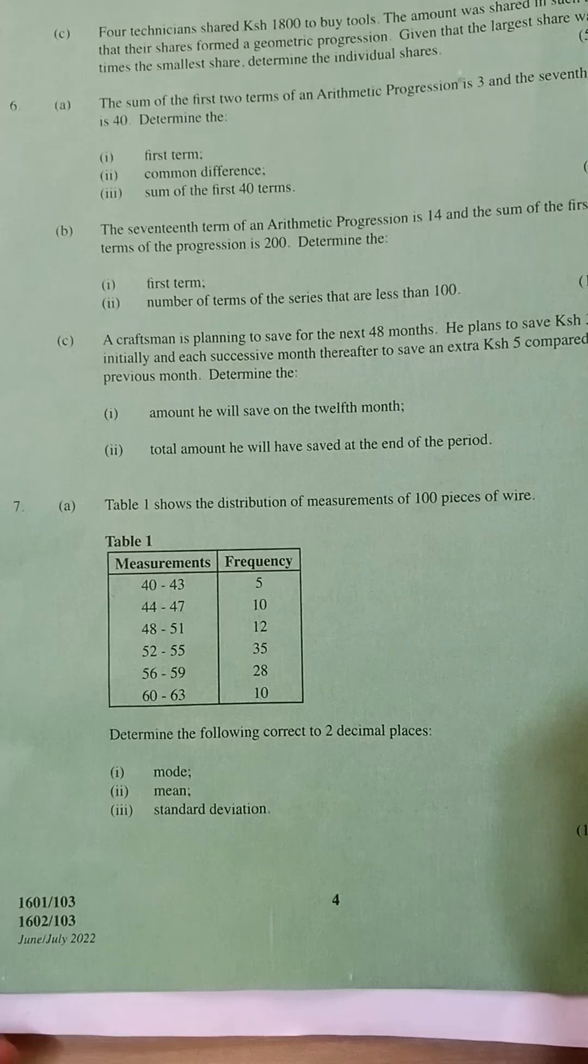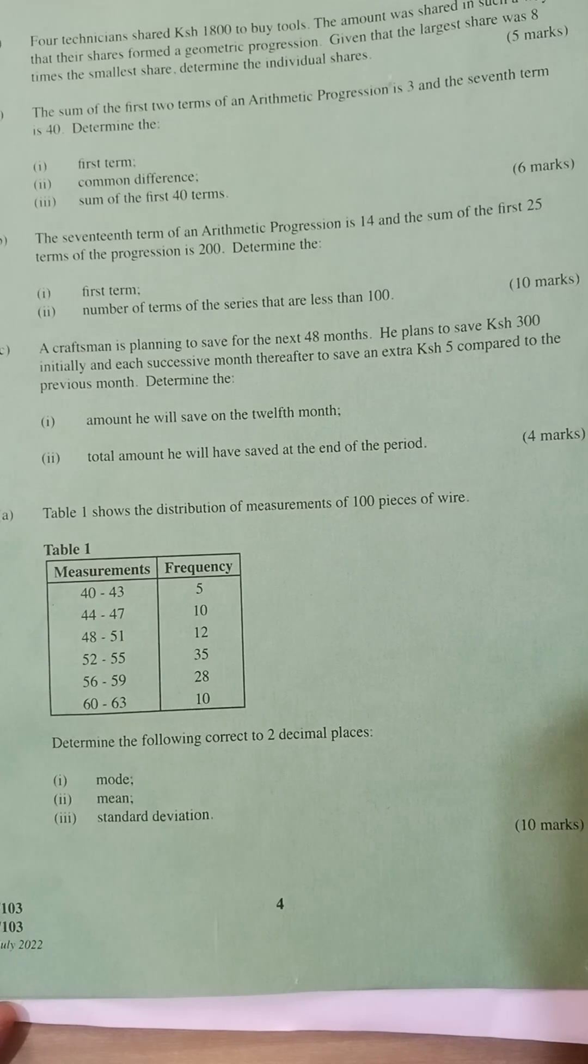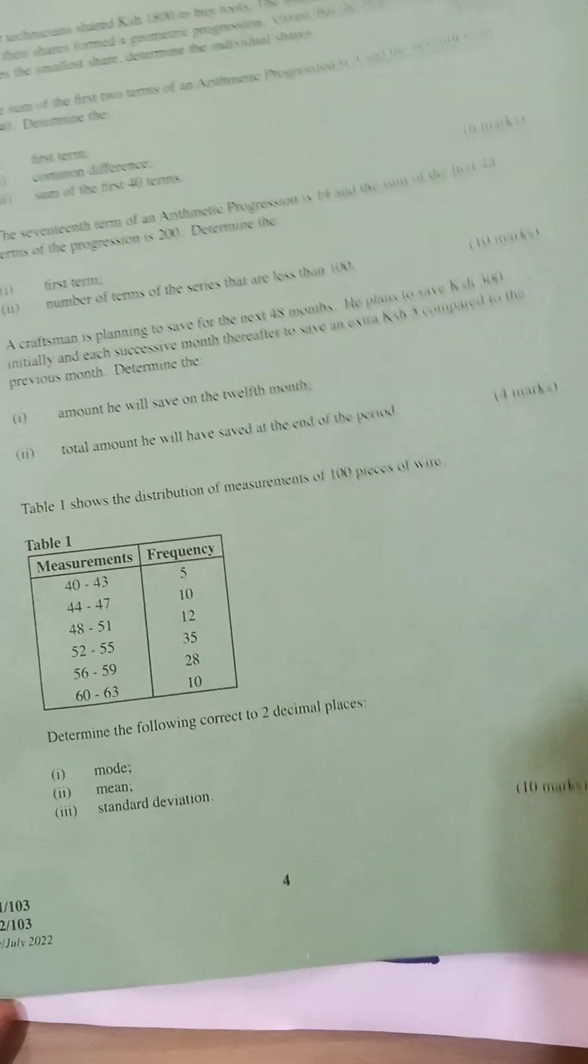Without wasting time, I'm going to look at question number seven. This question is 10 marks, it's a statistics question. The table shows the distribution of measurements of 100 pieces of wire. You have to determine the following: the mode, the median, and the standard deviation correct to two decimal places.